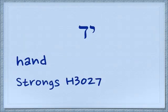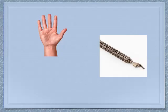The Yud makes basically a Y sound as a consonant, and the Dalet makes a D sound. Together they spell Yad. The word Yad means hand, and you can look it up under Strong's H3027. It is literally the hand — the human hand.